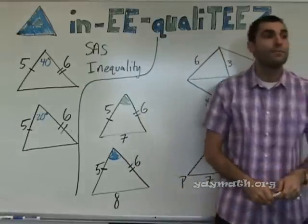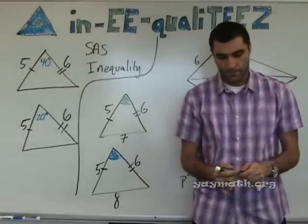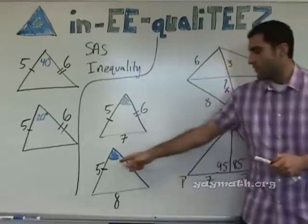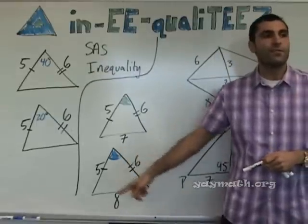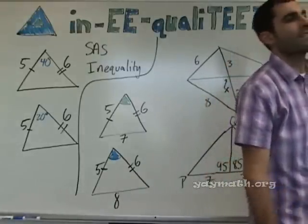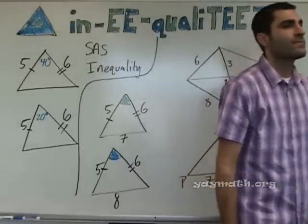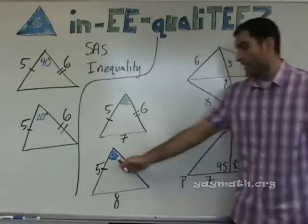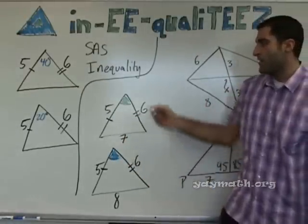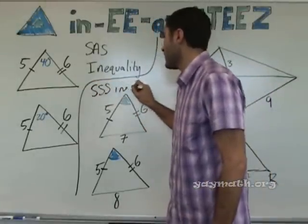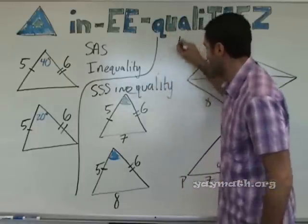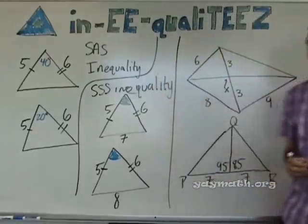Anyone can guess what this is called? So a question would be: which angle is bigger? That's what we're going to do here. The blue angle is greater than the green angle. It'll give you the two triangles and ask which angle is bigger. This is called SSS Inequality.